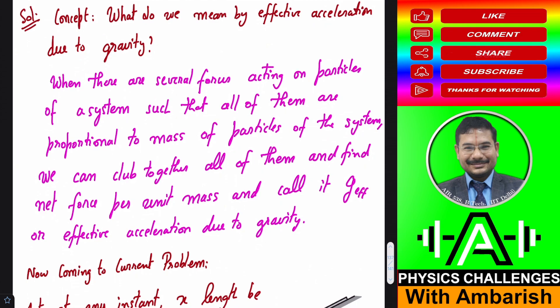First, even before I analyze this problem, I want to state what we mean by effective acceleration due to gravity. You know that gravity is a force proportional to mass. If there is a particle of mass mi, the force is mi times g. Not just gravitational force, there can be several other forces proportional to mass. For example, the pseudo force in a translating accelerated frame will be proportional to mass. In certain cases like buoyant force, this can be equivalently applied.